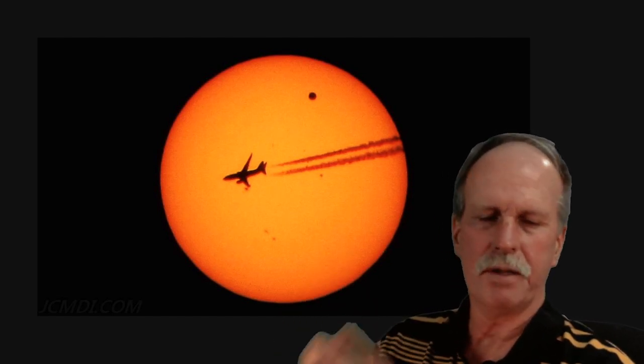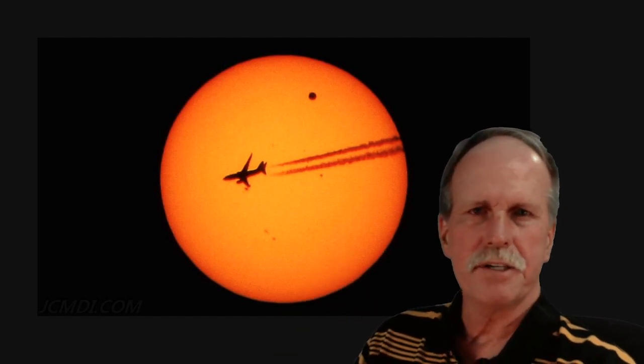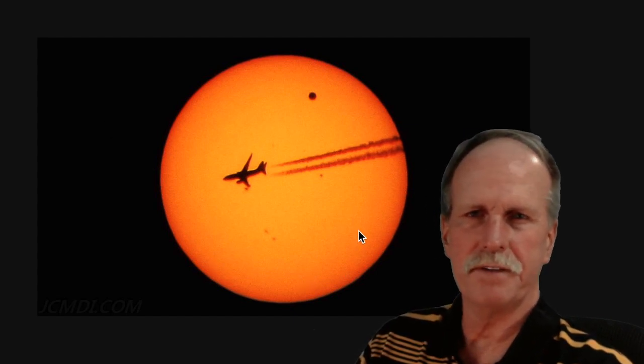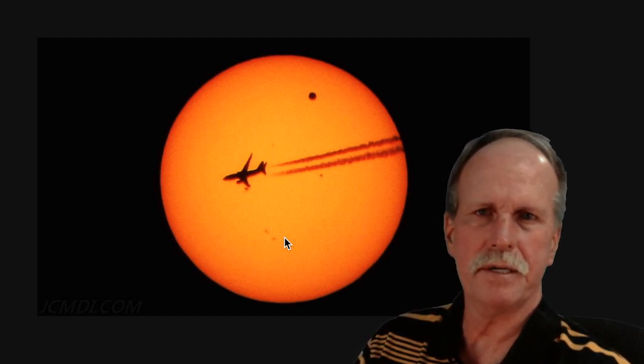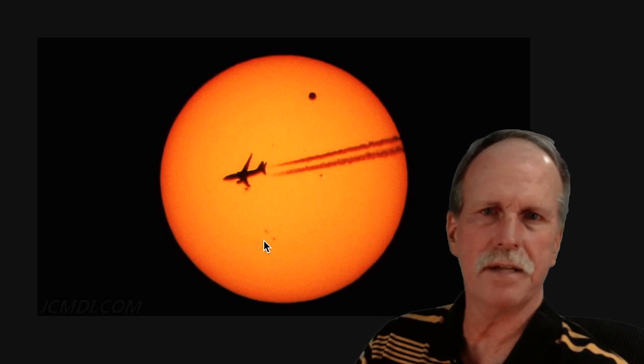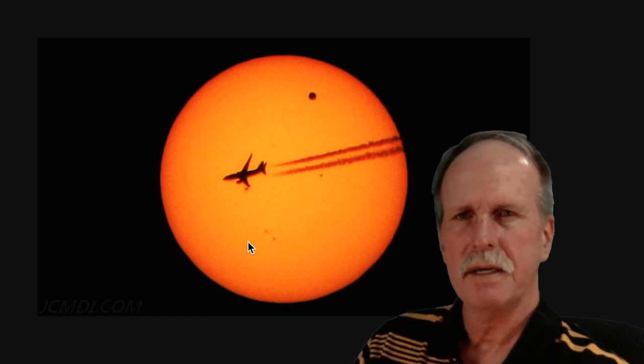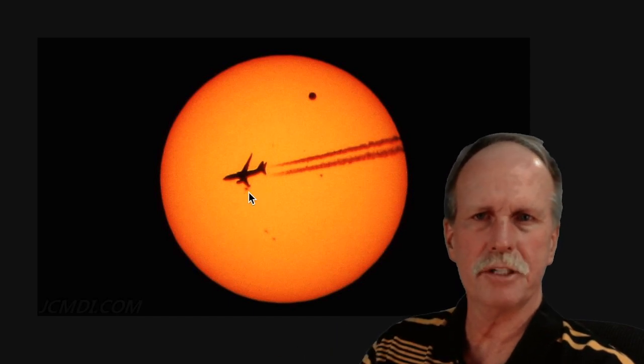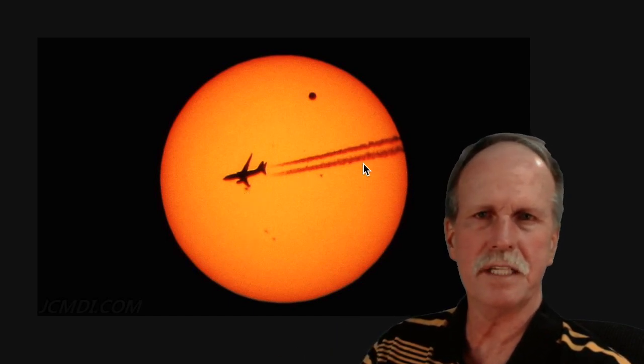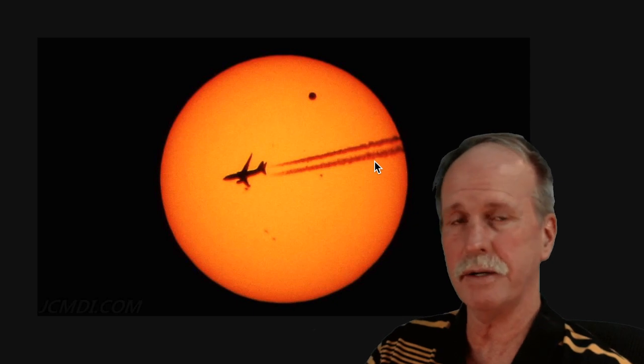Now how does the transit of Venus work? Well, first of all, here's a picture of the Sun. As you can see, there's a solar filter here, and we've got a couple of translucent sunspots here on the surface of the Sun. When objects pass between us and the Sun, we see them in silhouette, much like this airliner. We can even see the contrails behind the airliner in silhouette.